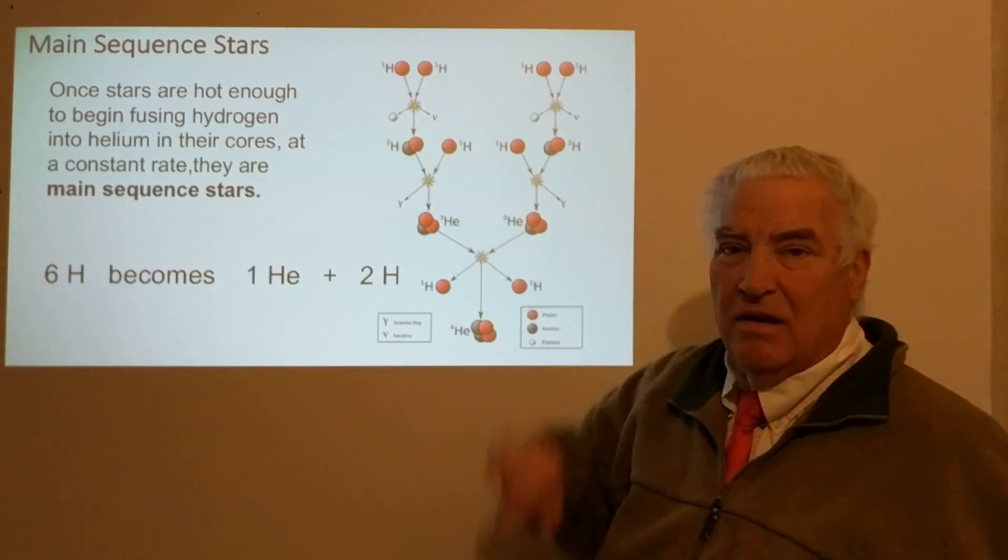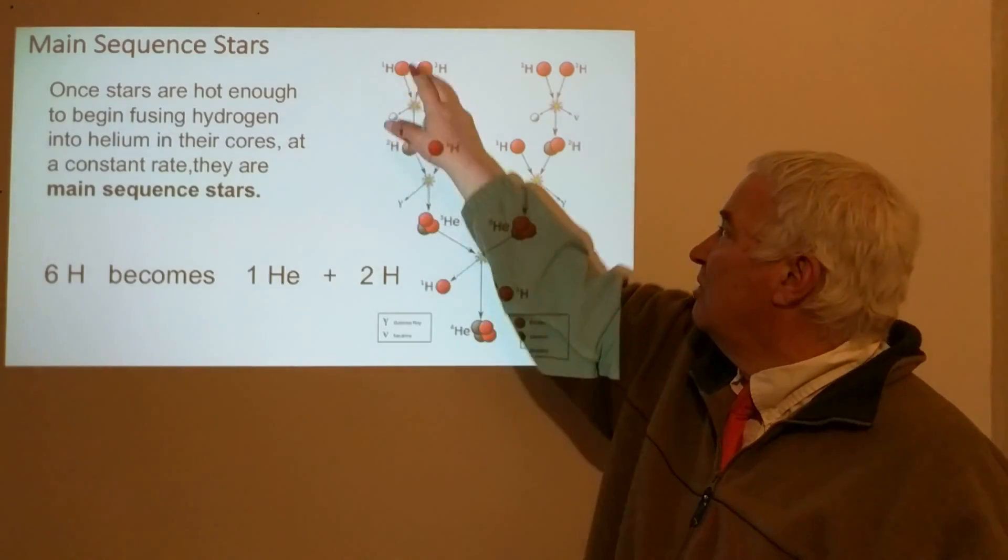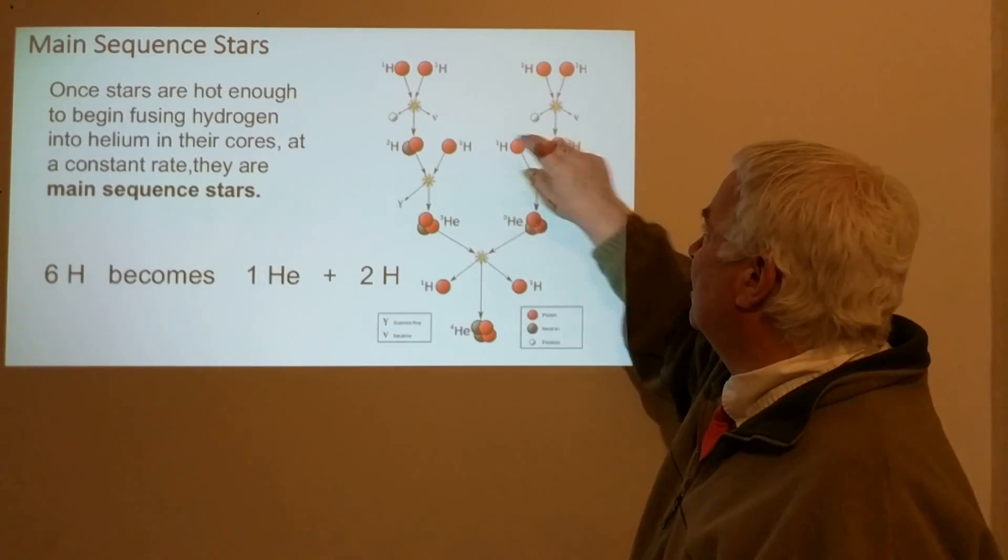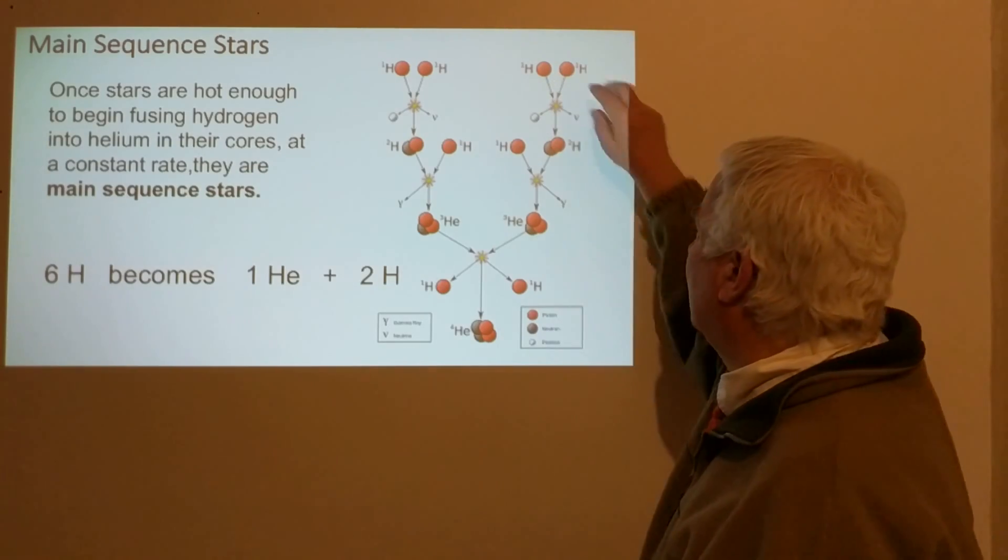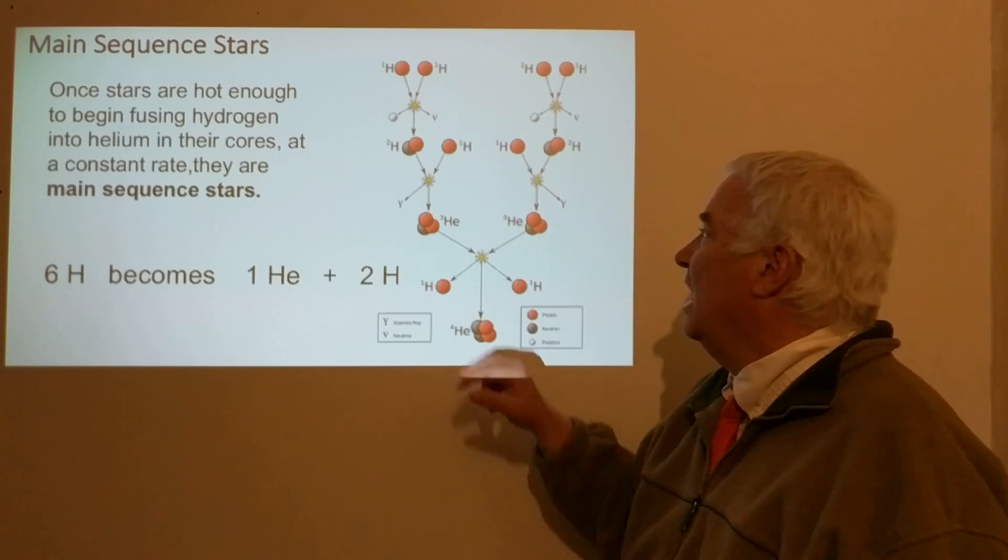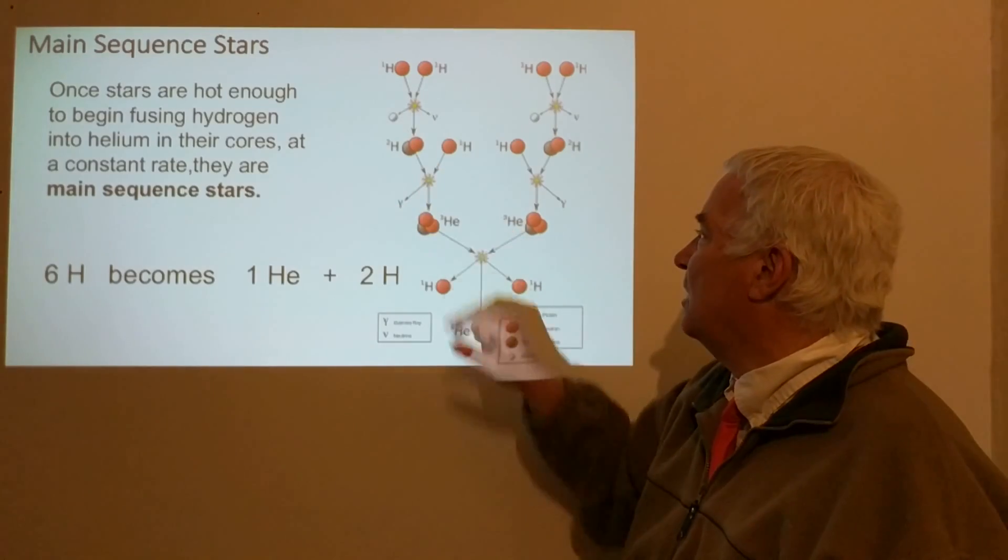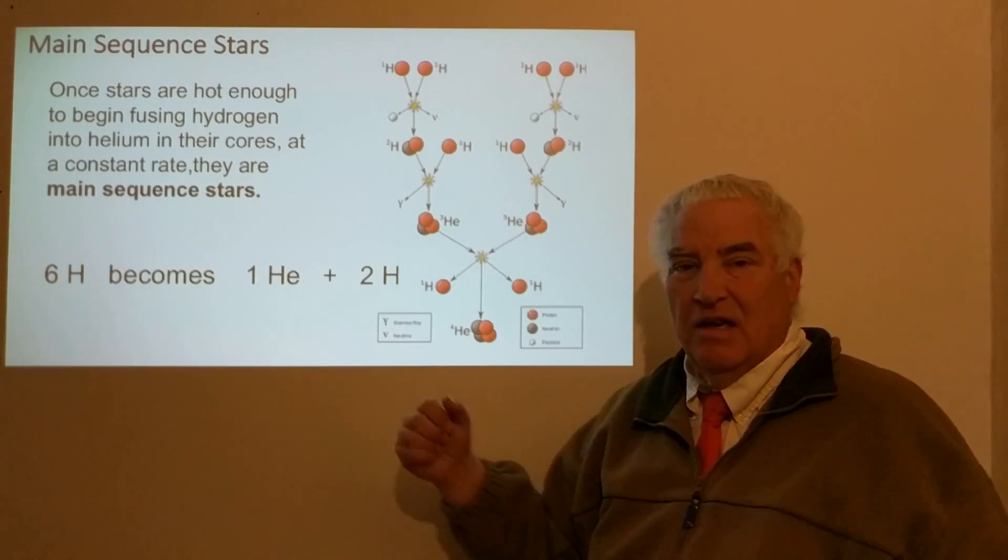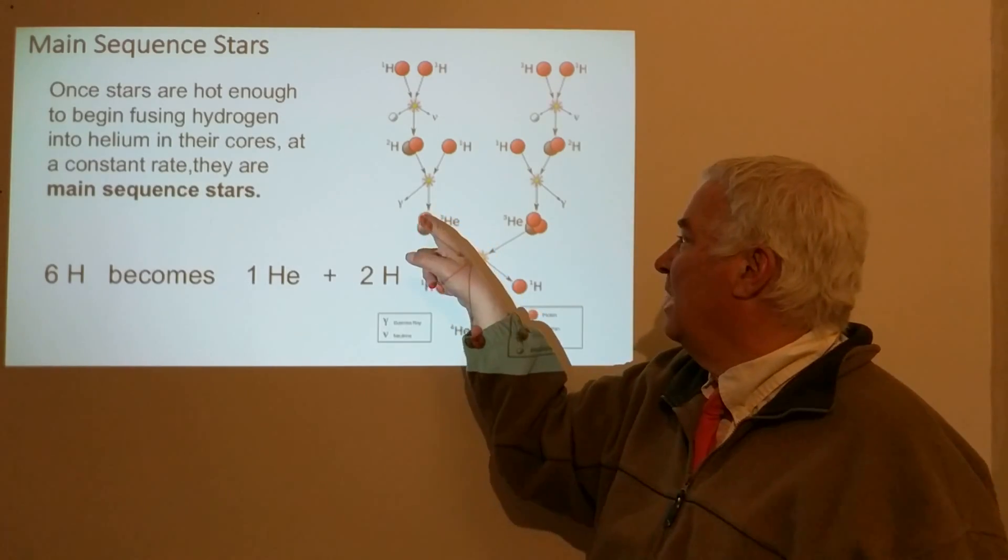This happens once at a time in the Sun—it happens all the time, but some place in the Sun this is happening, and then another place in the Sun it happens again. These two eventually will form the helium atom. A deuterium is formed and this hits another hydrogen atom.